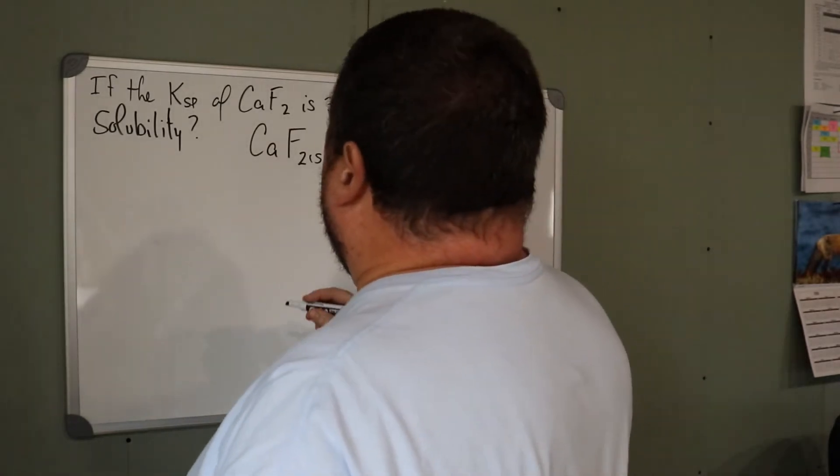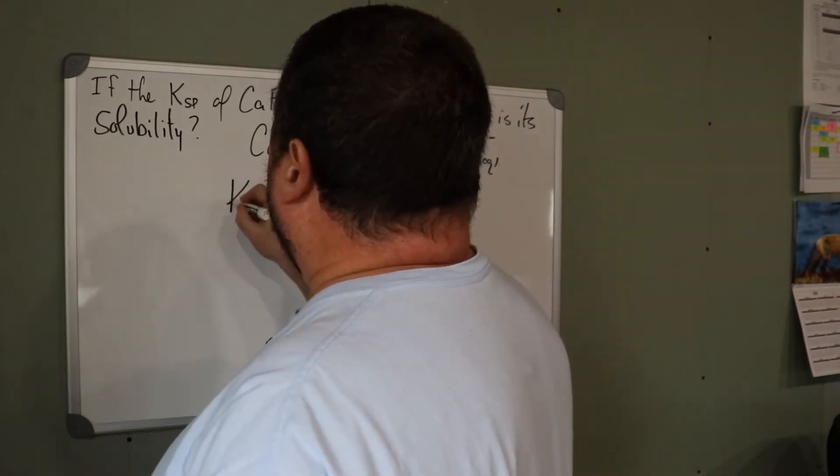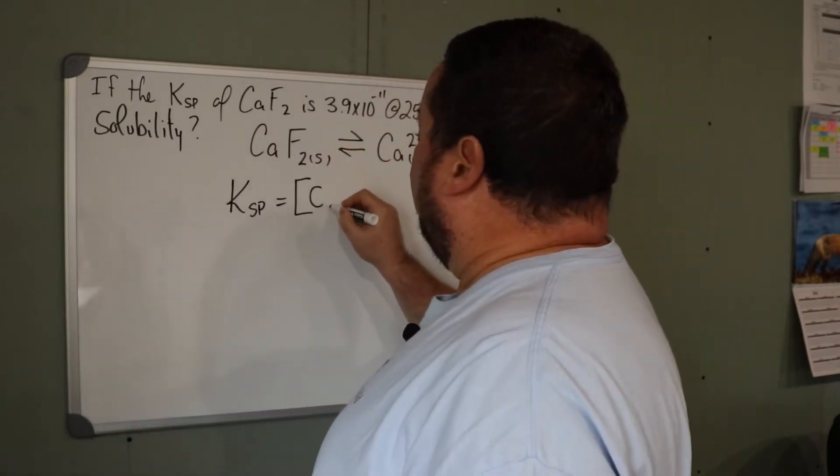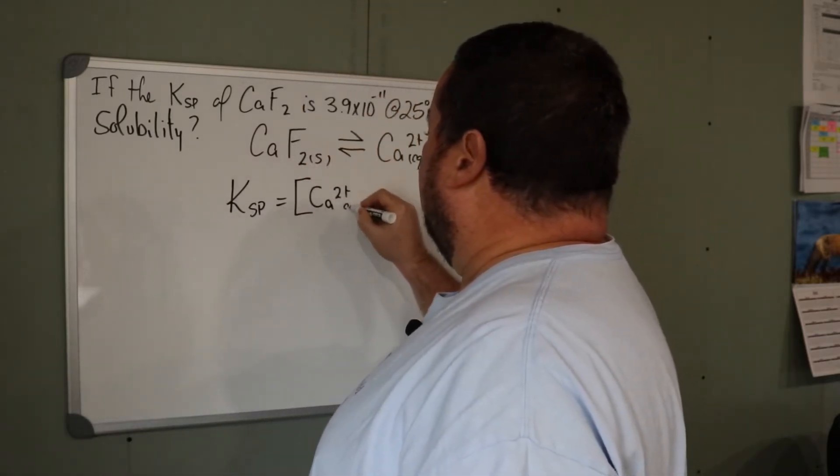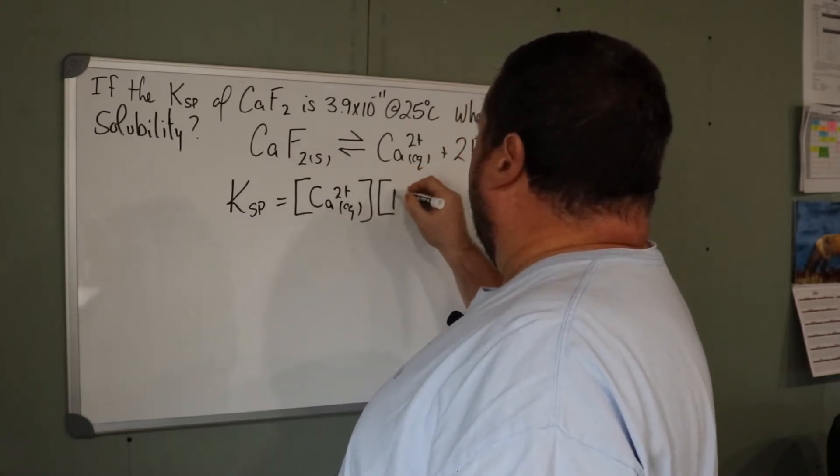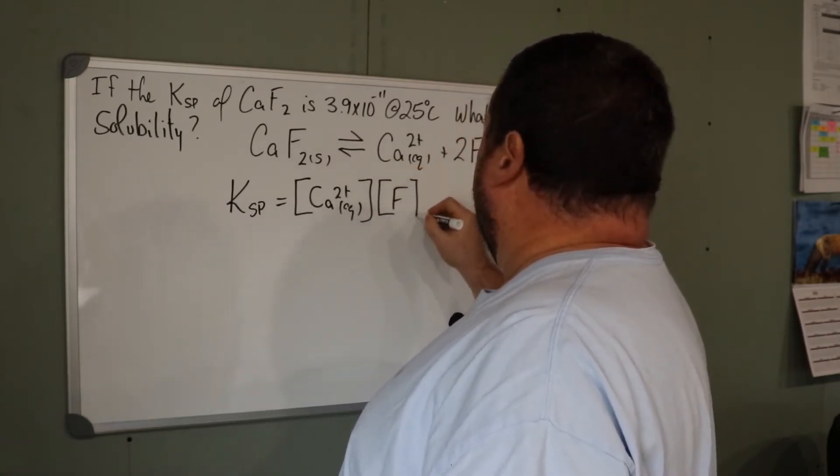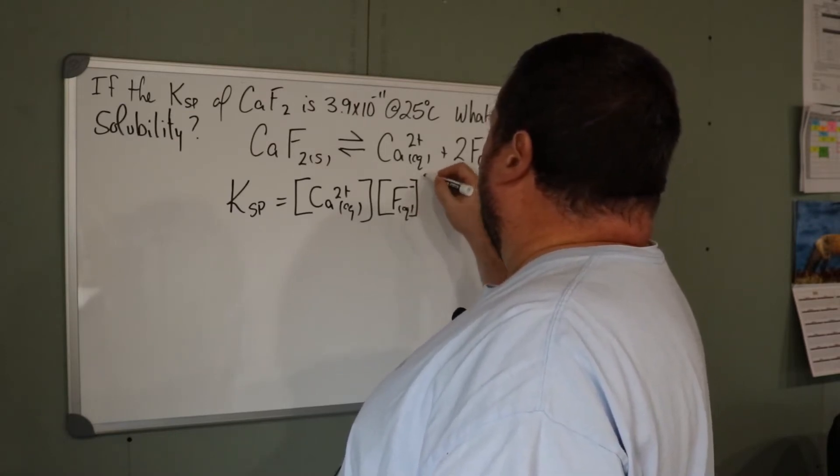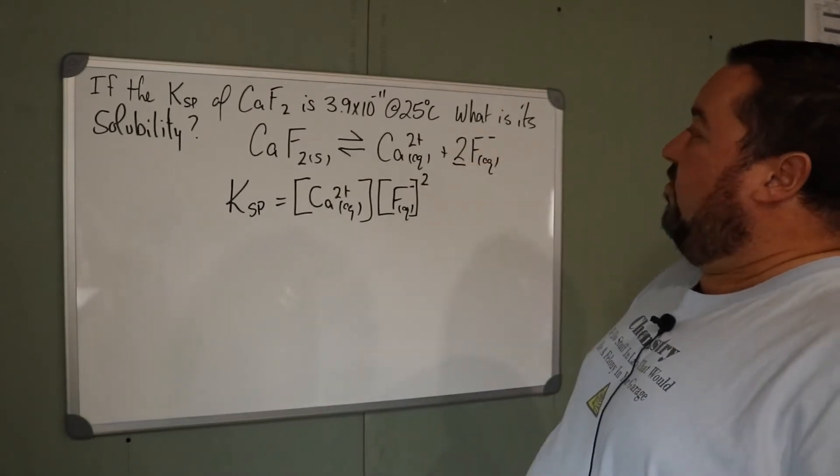We need to write the Ksp expression. It's the calcium ion concentration multiplied by the fluoride ion concentration squared. Squared because the coefficient was 2.